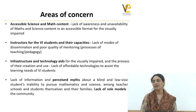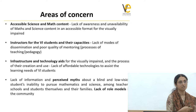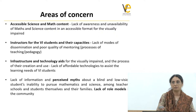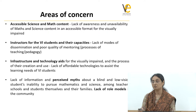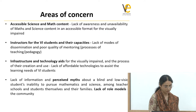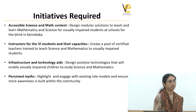Because of this percolating vicious cycle, there's a big lack of role models. Only about 100 people in the whole country studied science and math in higher education. In education, you do something because you see someone else has done it — and that role model simply does not exist.